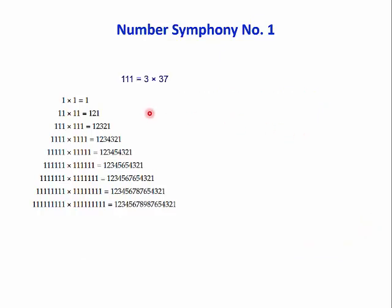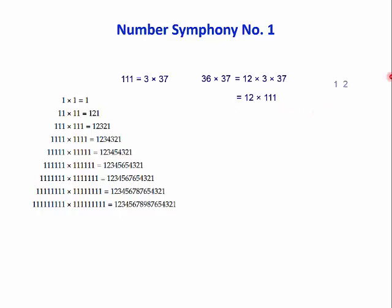Some of these numbers have useful factors. For example, 111 is 3 times 37, and we can make use of that. Suppose we want to find 36 times 37. There's a factor of three in 36, so we can write it as 12 times 3 times 37. The three times 37 is 111, so we want 12 times 111, which is very easy to do mentally: you've got 1 twelve, 10 twelves, and 100 twelves. You just add those up to get 1332.